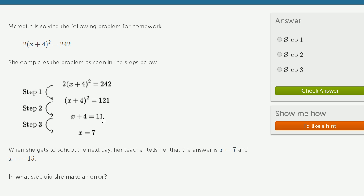and the square root of 121 is 11. And this is where she made a small but very important mistake.